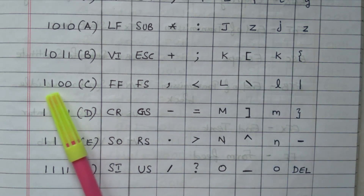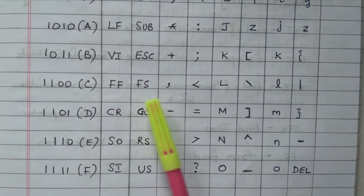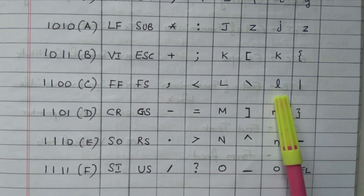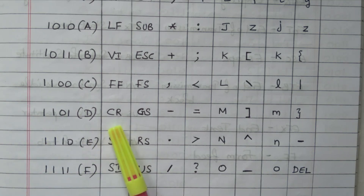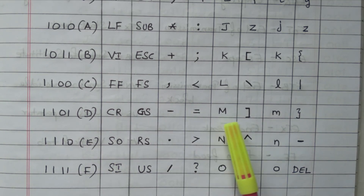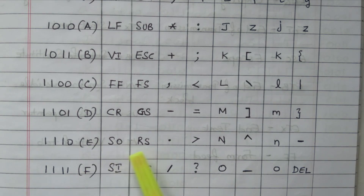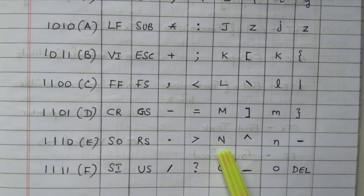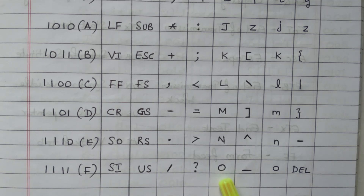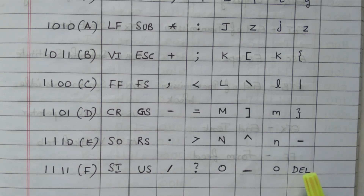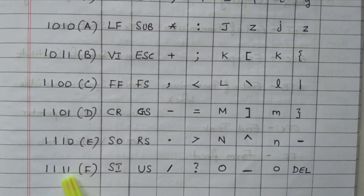With LSB 1101 (hex D): CR, GS, hash symbol, equals symbol, capital letter M, closing bracket, small letter M, closing parenthesis. With LSB 1110 (hex E): SO, RS, dot, greater-than symbol, capital letter N, power symbol, small letter N, minus. With LSB 1111 (hex F): SI, US, slash, question mark, capital letter O, small letter O, colon, DEL. So these are all the combinations — 128 symbols available in the ASCII — all discussed. The first column refers to the LSB; each other column combines MSB and LSB.